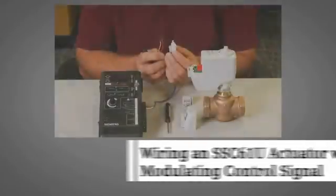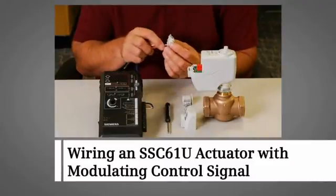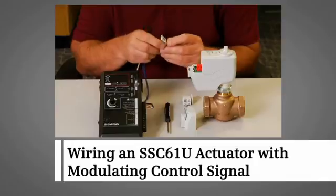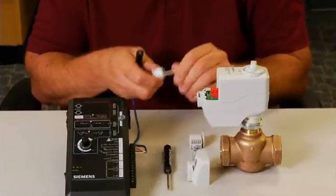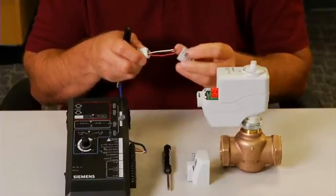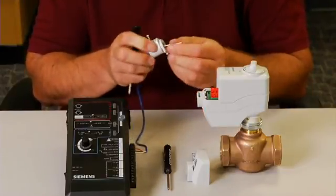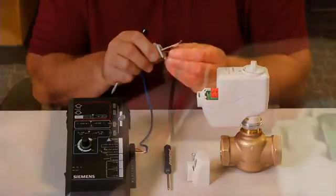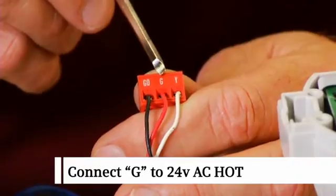This video demonstrates wiring of the SSC 61U to a controller that uses a 0 to 10 VDC control signal. First, we need to terminate three wires to the actuator's terminal block. Feed the wiring through the cabling adapter and then connect G to the 24 volt AC hot terminal.